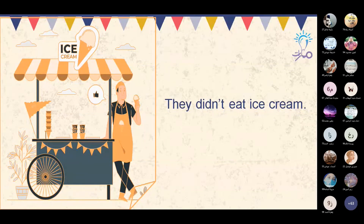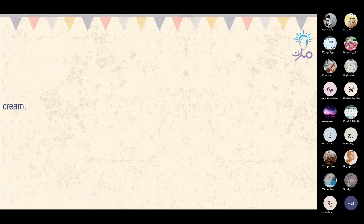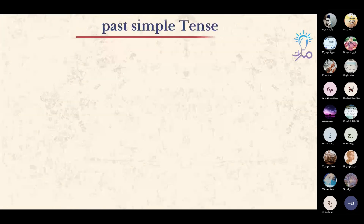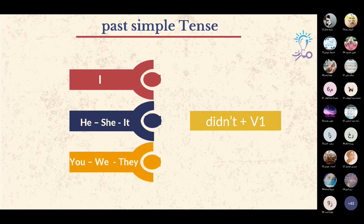نستنتج هنا بالنسبة للنفي — كيف إذن نصيغ النفي في الماضي البسيط؟ نلخص هذا الأمر بالقاعدة التالية: جميع الضمائر تأخذ didn't.